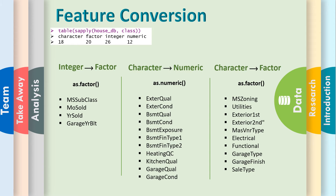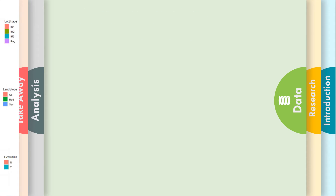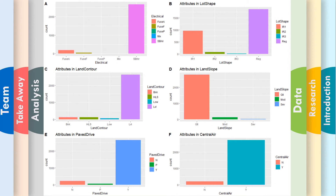Feature conversion: converting integer to factor, character to numeric, and character to factor using the as.factor and as.numeric functions. We are creating binary features by converting factorial features to zeros and ones, which is numeric. Here are examples of some more features converted to binary.